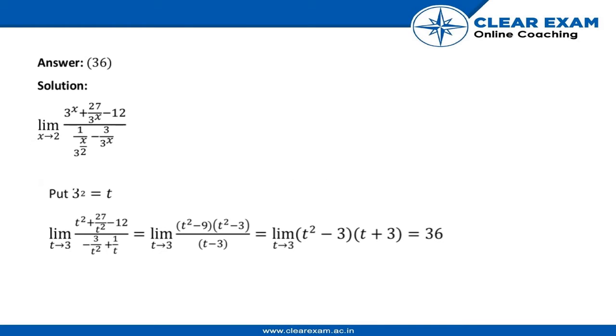Now here the answer is 36. So as we are given the question that limits x tends to 2, 3x plus 27 by 3x minus 12, divided by 1 by 3 to the power x by 2 minus 3 by 3x.